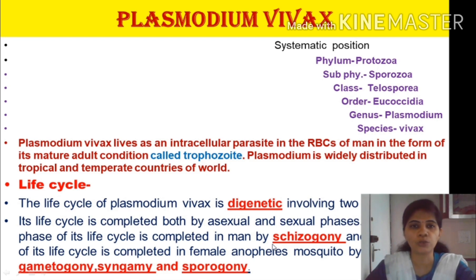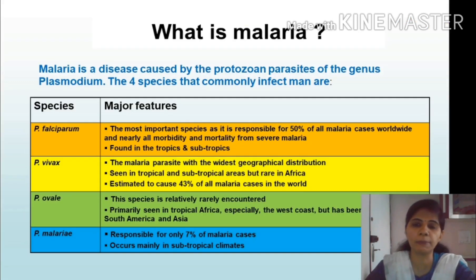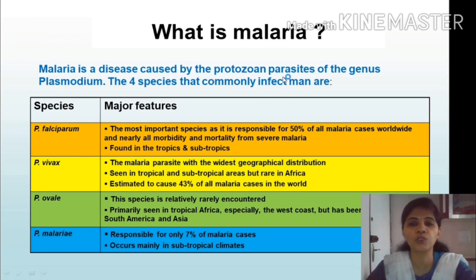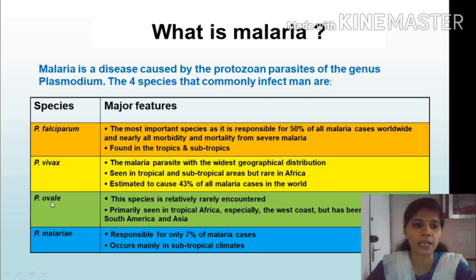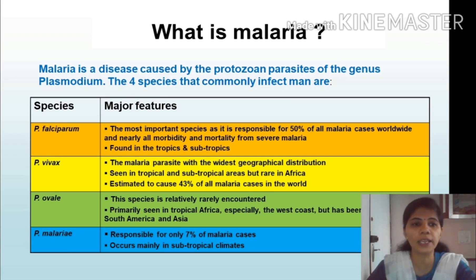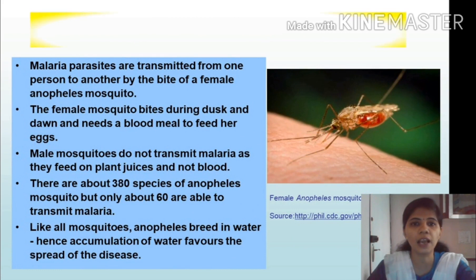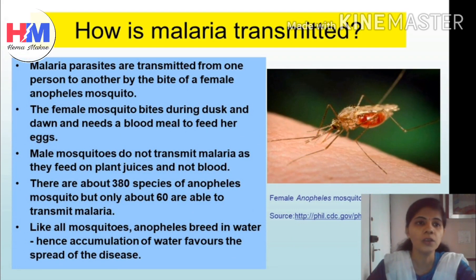The sexual phase involves gametogony, syngamy, and sporogony. The two important hosts to complete the life cycle of Plasmodium vivax are the human being and the female Anopheles mosquito. Malaria is a disease caused by the protozoan parasites of the genus Plasmodium. There are four species commonly known to infect human beings: Plasmodium falciparum, Plasmodium vivax, Plasmodium ovale, and Plasmodium malariae, each causing a different type of malaria.